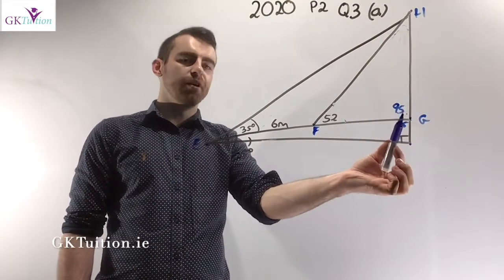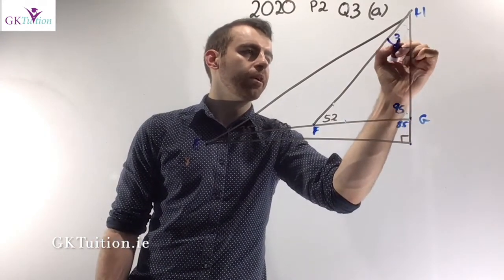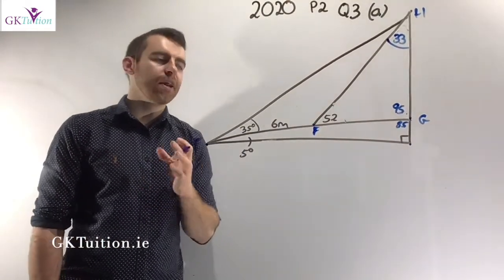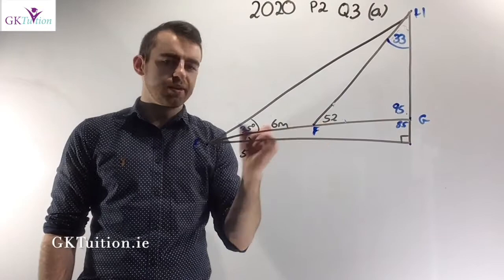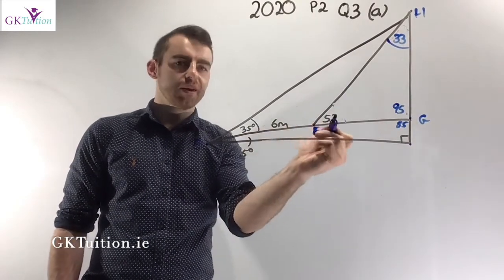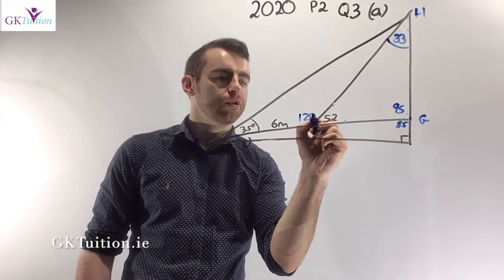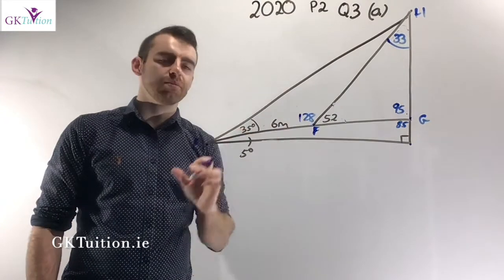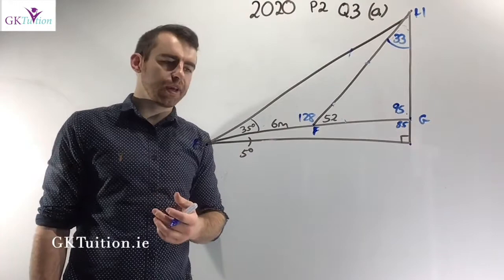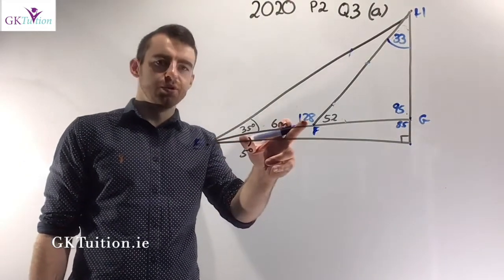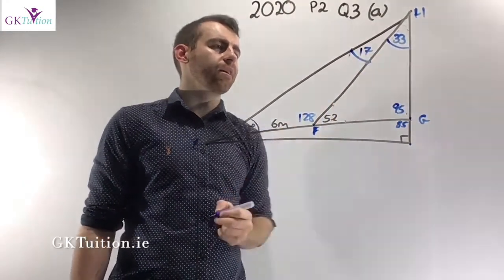Now that I know this angle is 95 degrees and this one is 52 degrees, I can deduce that the angle up here is 33 degrees. There are only two other angles left to fill in. If this angle is 52 degrees, the supplementary angle is 180 minus 52, which gives 128 degrees. And the final angle: 180 minus 35 minus 128 gives 17 degrees.